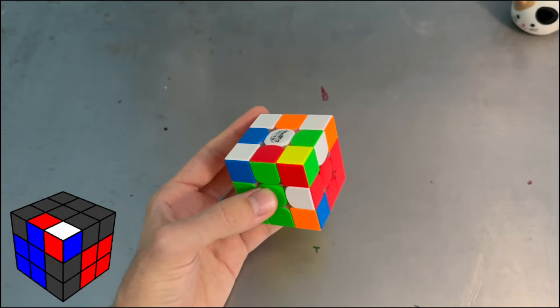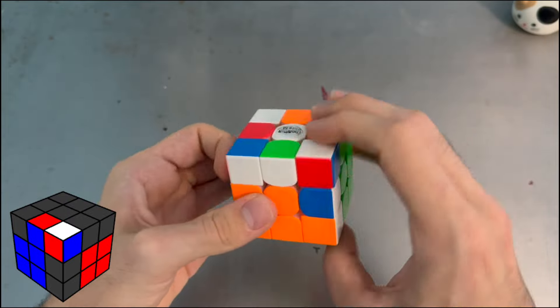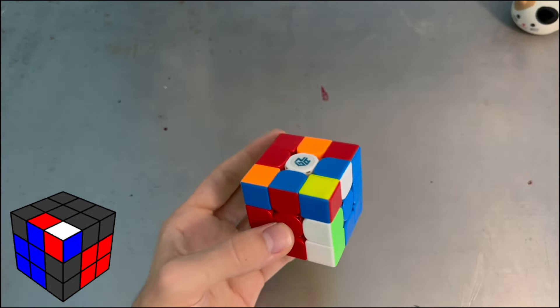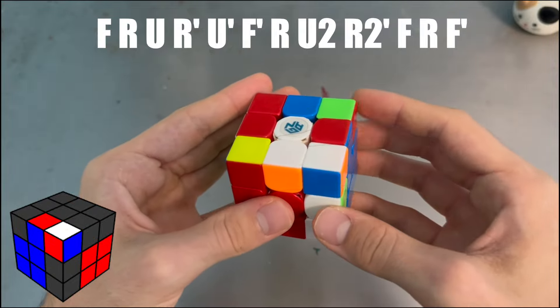Next up is this one where you can rotate, insert it normally, or to get full EO just do F sexy F prime and solve this pair for the sledge.